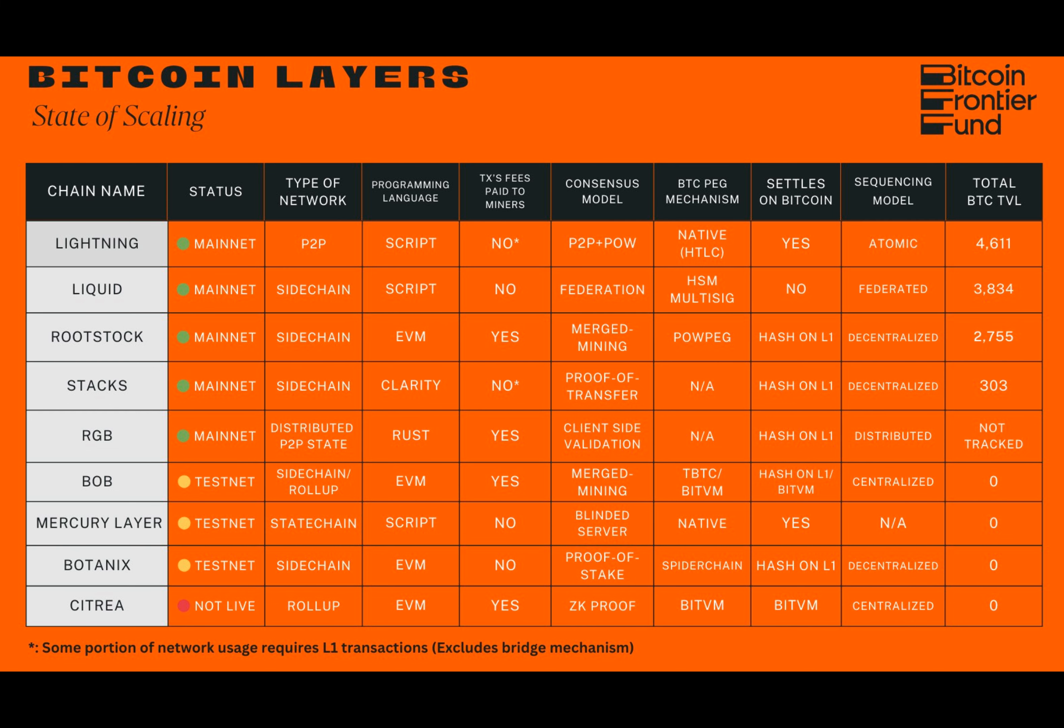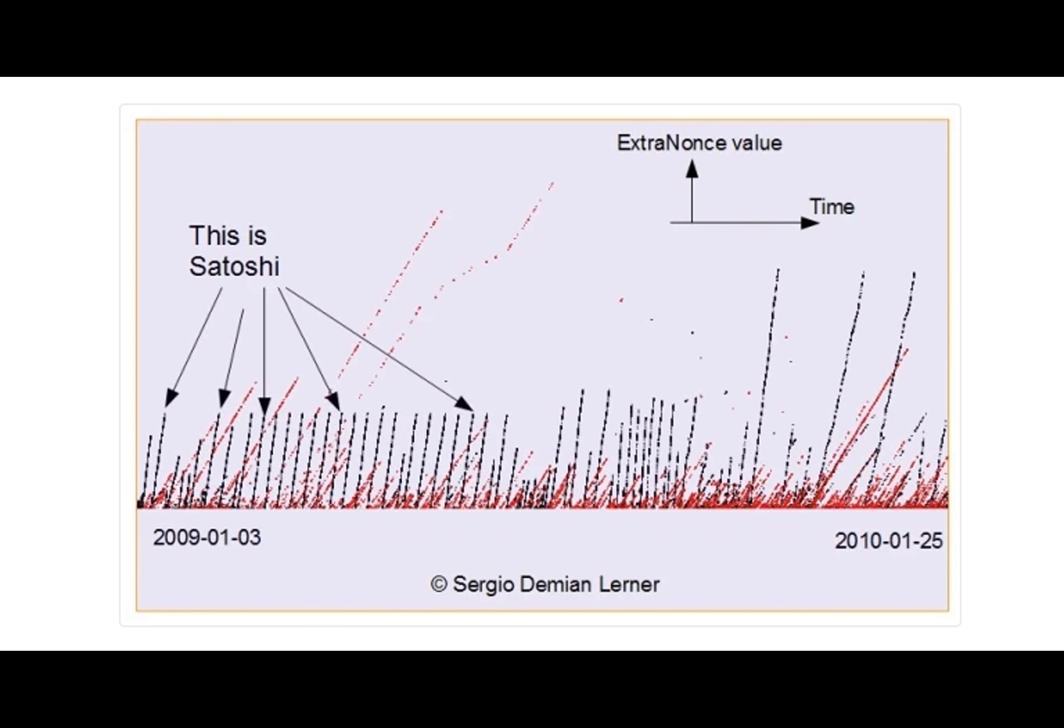The Bitcoin community has been vocal about the increased affinity marketing ploys by startups promoting Bitcoin L2s and claims to operate natively on-chain.